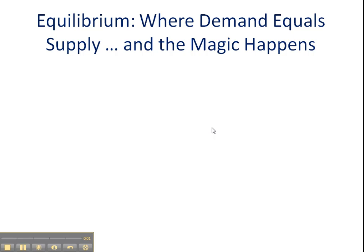Hello folks, in this brief lesson we're going to talk about market equilibrium. That's the point where demand and supply meet, or where they equal one another, and quite honestly that's where the market magic happens. So let's get into our analysis.